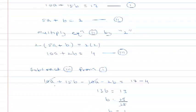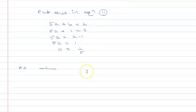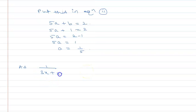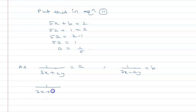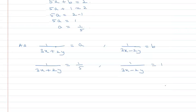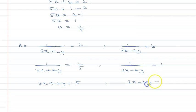We had let 1 upon (3x + 2y) = a = 1/5, and 1 upon (3x - 2y) = b = 1. Cross-multiplying gives us 3x + 2y = 5 (equation 4) and 3x - 2y = 1 (equation 5).